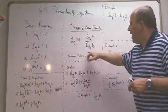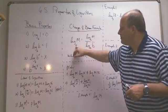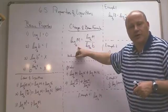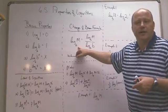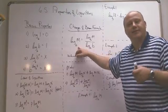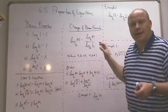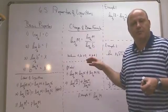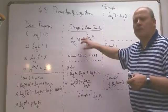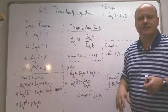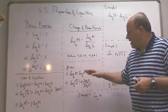Even though A can be any valid base, in practice your calculator can only compute log base 10 (common log) and the natural log. So when B is something like 2 or 3 that your calculator can't handle directly, you convert using natural log or common log. I'll prove this formula in class — it's about a three or four step process.